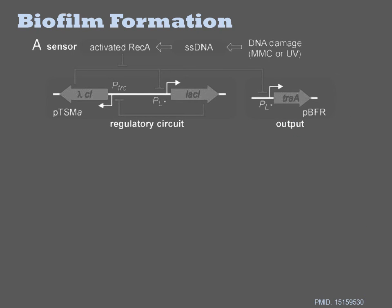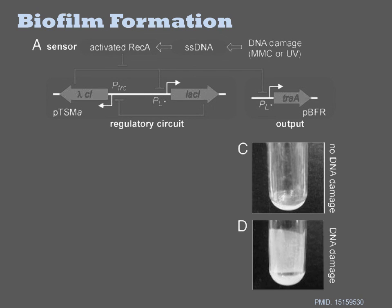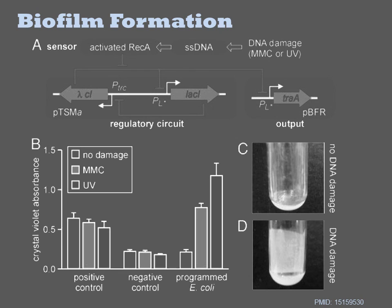Here is an example of adhesion assays in action from the Collins lab. They have a toggle switch composed of lambda CI and lacI — this switch is fully on or off and can be switched between these states. This transcriptional circuit controls expression of the TraA gene. In response to DNA damage, the toggle switch flips on, TraA is produced, and this complements a missing copy of TraA needed to complete biofilm formation. Thus, DNA damage results in biofilm formation. To observe this behavior, they treat the bacteria with DNA damaging agents such as UV light or chemical mutagens, and then perform the same crystal violet staining of adhered bacteria as described before, and plot the purple intensity for the different conditions.